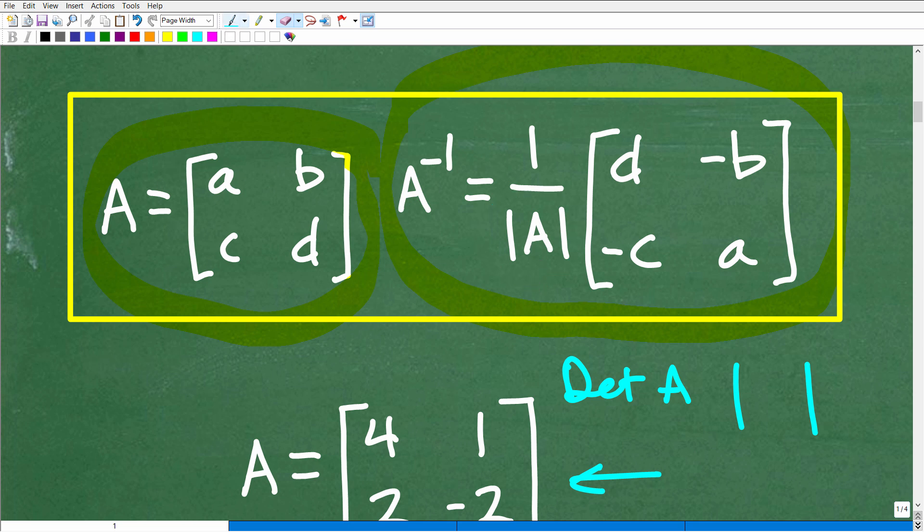And this part of the formula, good way to think about this is the following. Take a look at these diagonals right here. We have C and B. So, we still have C and B right here. It's just the opposite. So, whatever you have on this diagonal, just put the opposite signs.